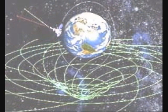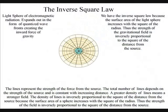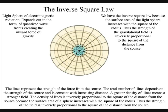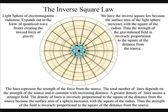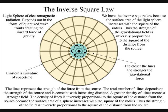Note how this process works in the three dimensions of our everyday life, unlike the diagrams of gravity in the form of a trampoline that are just two-dimensional. We have the inverse square law because the surface area of the light sphere increases with the square of the radius, thus the strength of the gravitational field is inversely proportional to the square of the distance from the source.